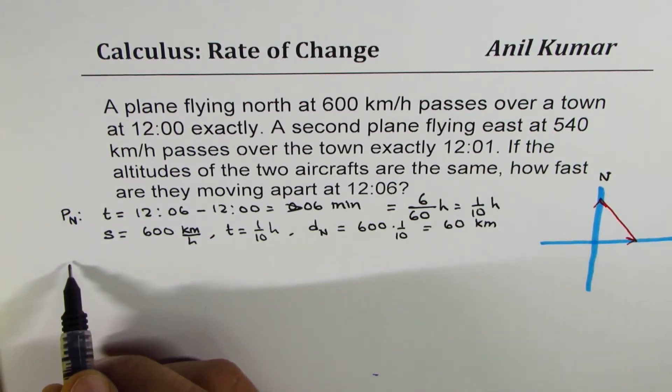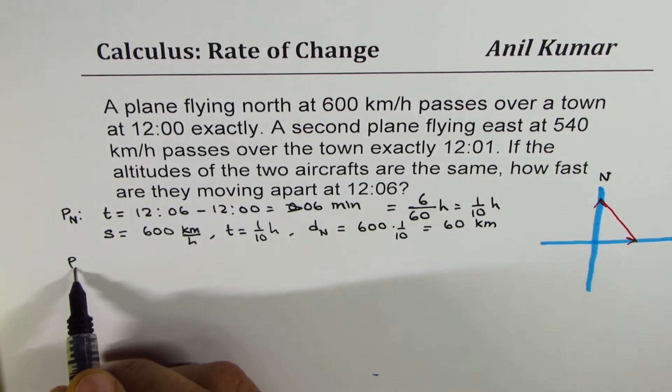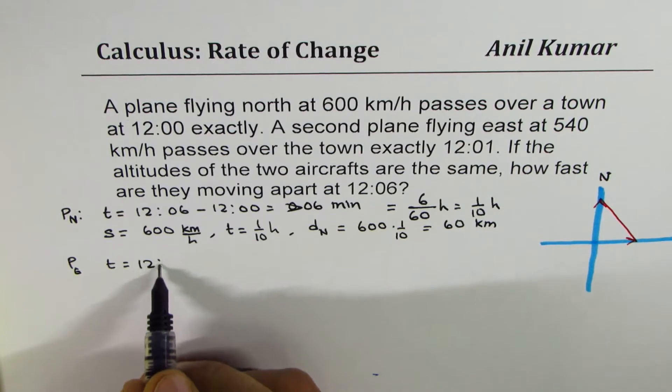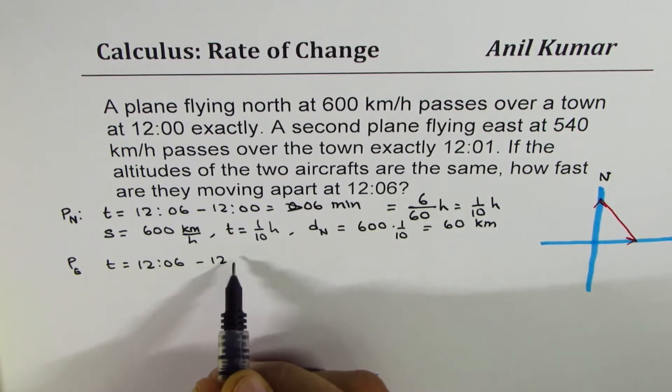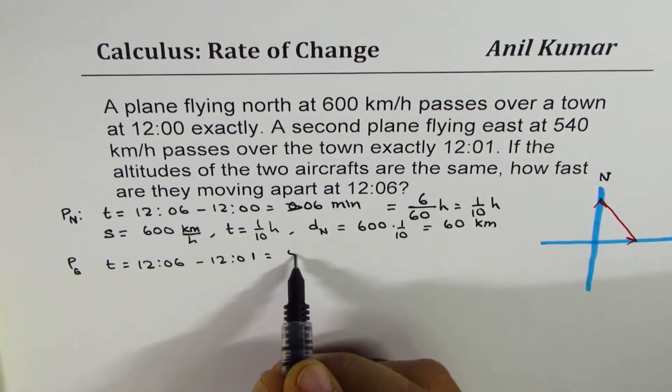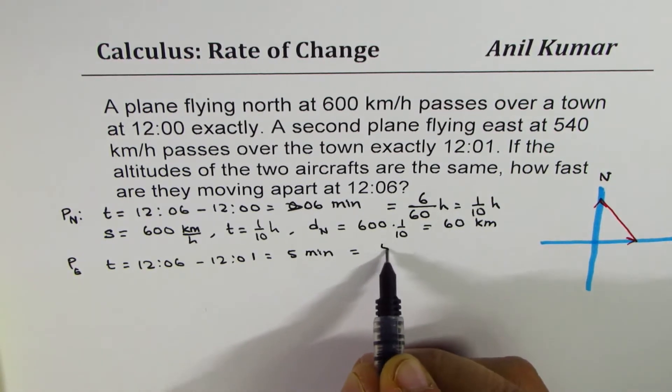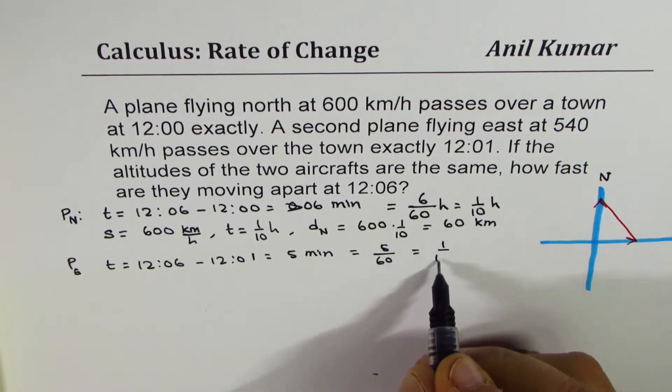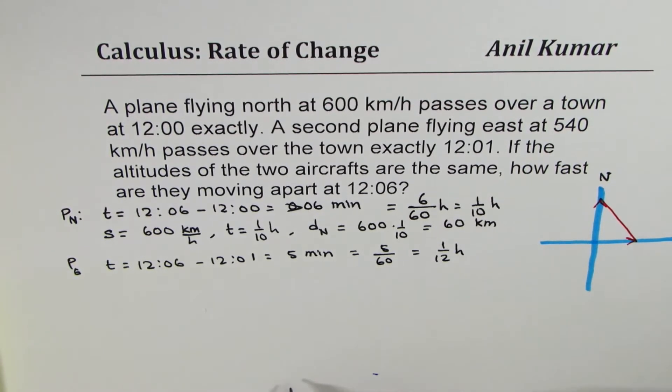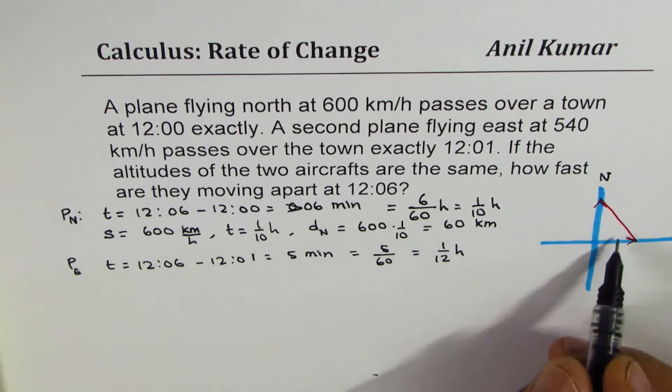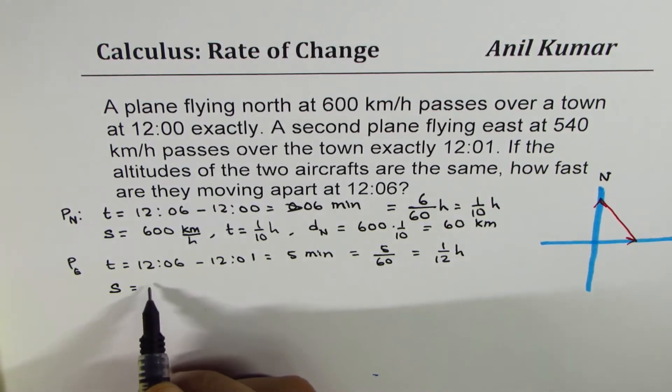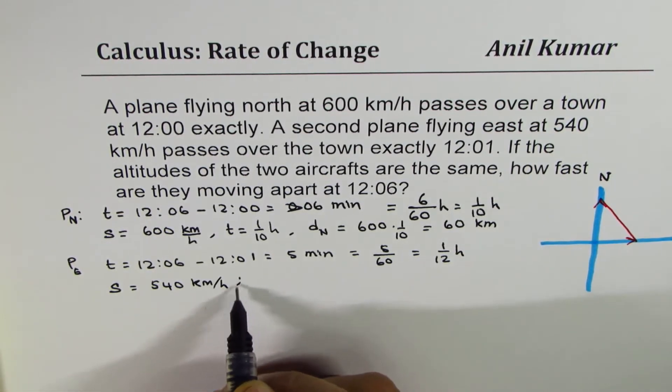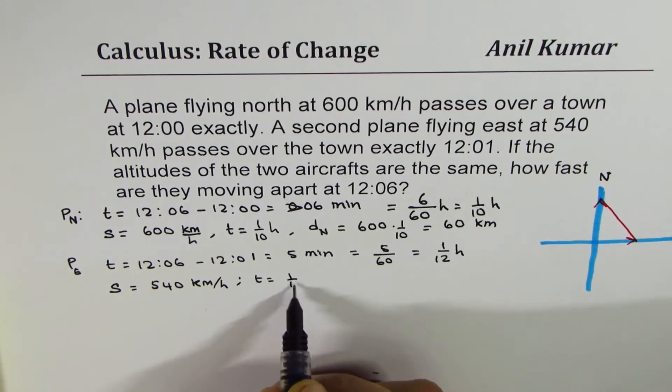Similarly let's write down the conditions for the plane which is going towards east. Now for that plane, time will be 12:06 take away 12:01, that means 5 minutes, or 5 over 60, that means 1 over 12 hours.